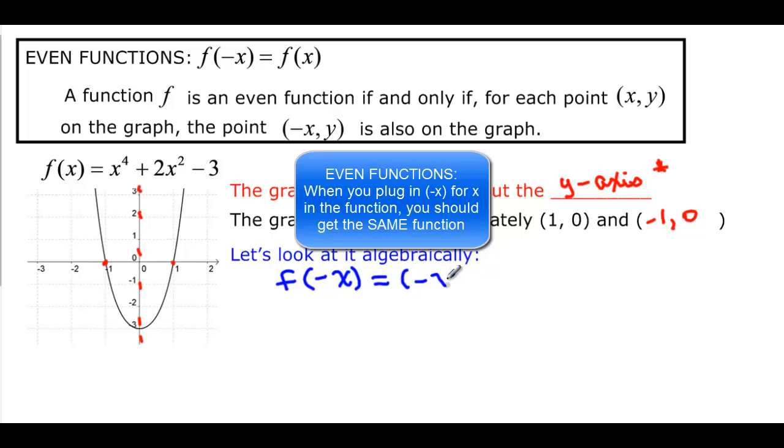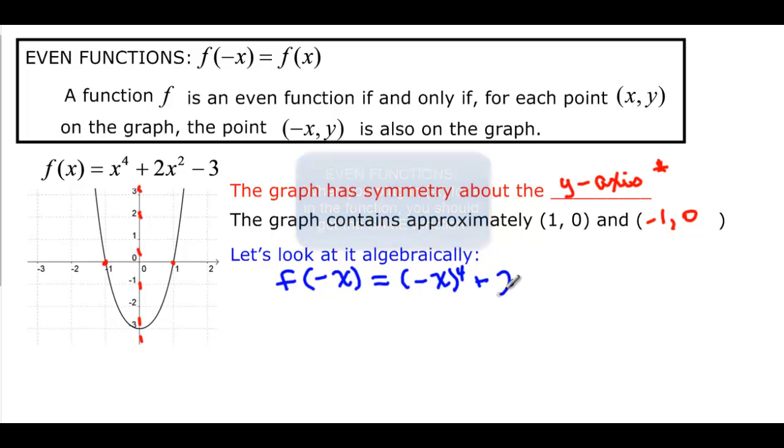But remember, this means put in negative x and then to the fourth plus 2 times negative x squared minus 3. Negatives to an even power will be positive, so that's x^4 + 2x^2 - 3, which is my f(x).